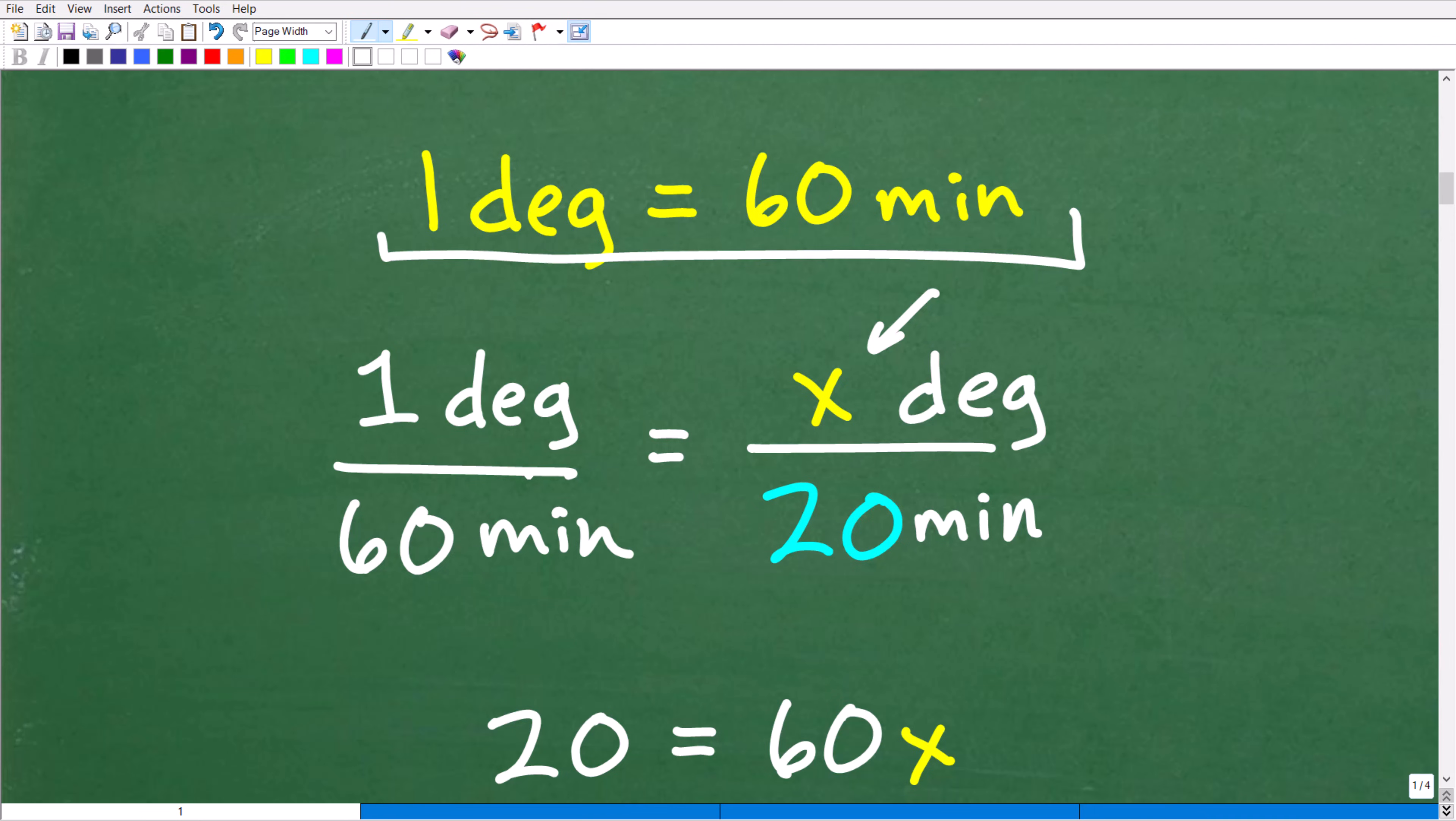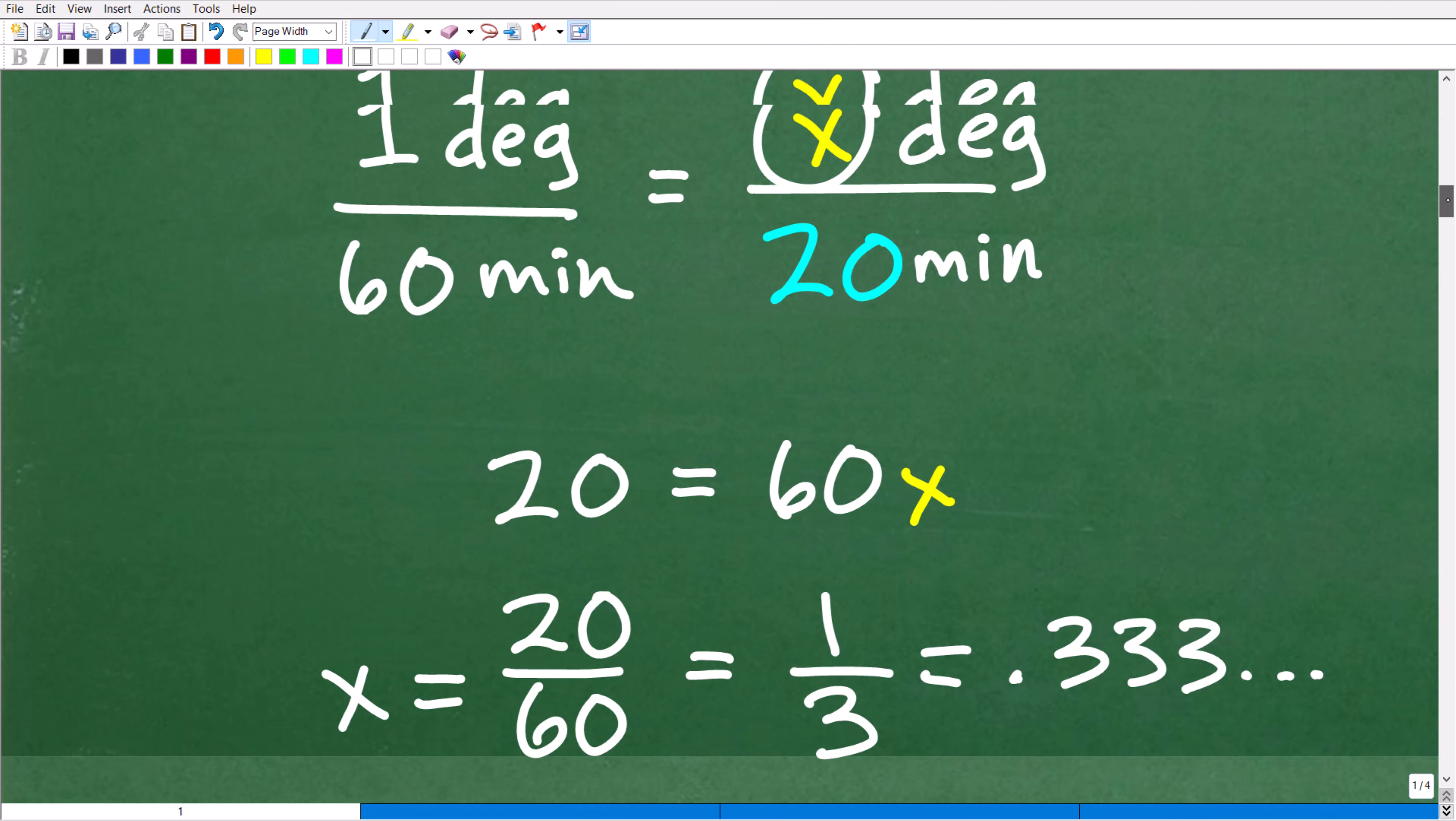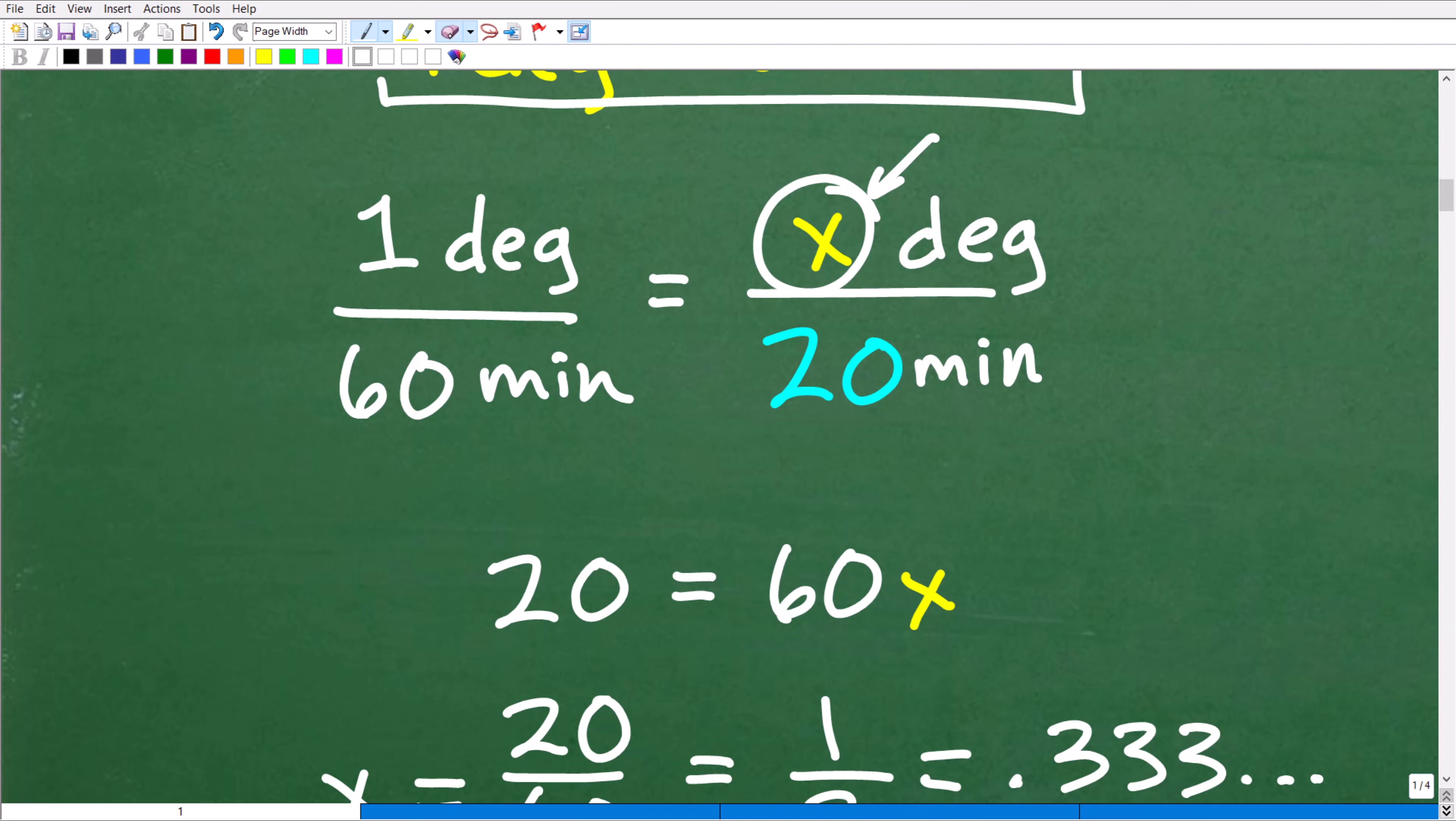So you just set up a simple proportion just like this. So one degree is to 60 minutes. This is our equivalency, our conversion factor, if you will. And we want to know how many degrees is 20 minutes. So one degree per 60 minutes. This is our proportion that we're setting up for. We can just set up this simple proportion. And then, of course, we can just use basic algebra and use the cross product. So that's going to be 20 times 1, which is 20. And then 60 times x is 60x.